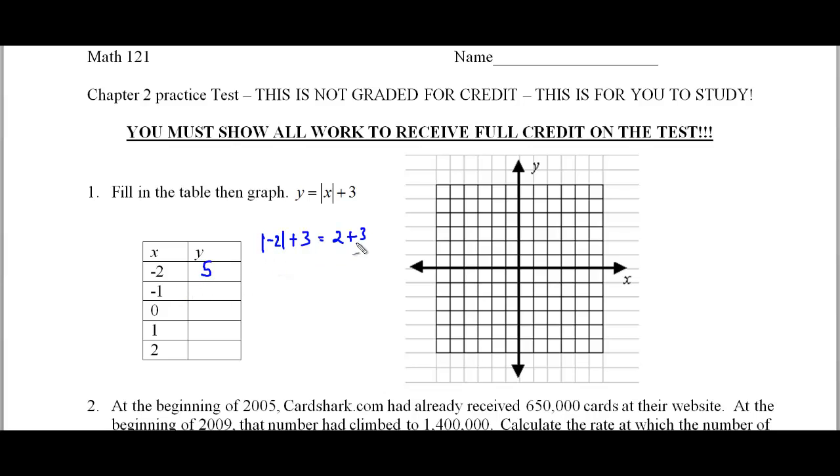So we're going to plot that point at x equals negative two and y equals one, two, three, four, five, and there we go. There's the dot. And let's now do the next problem, which is going to be putting negative one in for x plus three, which is the same as one plus three. So our answer is four.